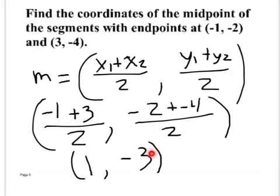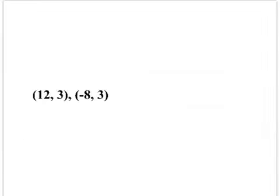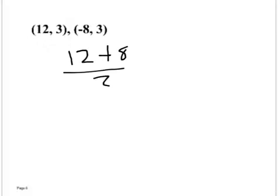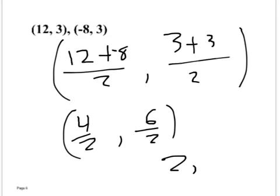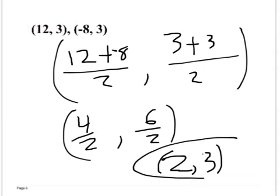One more example: find the midpoint between (12, 3) and (-8, 3). Take (12 plus -8) divided by 2 for the x-coordinate, and (3 plus 3) divided by 2 for the y-coordinate. Twelve plus negative eight is four, divided by two is two. Three plus three is six, divided by two is three. The midpoint is (2, 3). That's your homework.